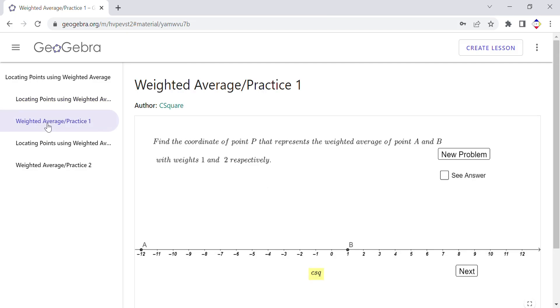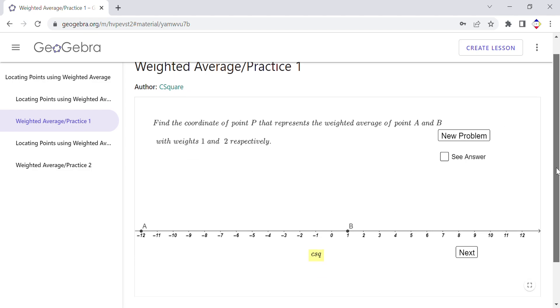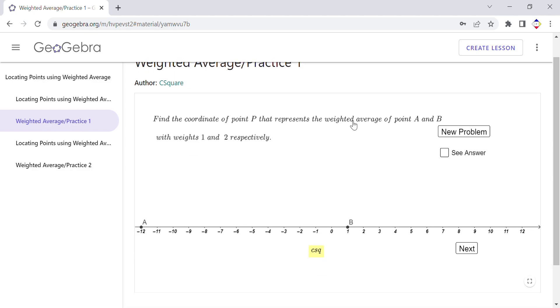This is the first part of this GeoGebra book. Going back, you move to the second part, the second application in this GeoGebra book. This is a practice, so here you can practice what you learned. You can check your answer, do the math, and then click See the Answer and see if you get the same thing.